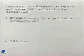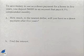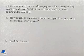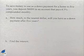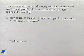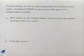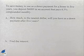We're now going to look at another problem dealing with investments. To save money to use as a down payment for a home in five years, you deposit $6,000 in an account that pays 6.5% compounded monthly. How much to the nearest dollar will you have as a down payment after five years?